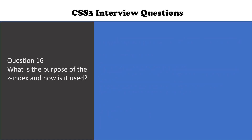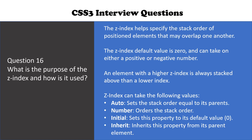The next question is: what is the purpose of z-index and how is it used? The z-index helps specify the stack order of positioned elements that may overlap one another. The z-index default value is zero and can take on either a positive or a negative number. An element with a higher z-index is always stacked above one with a lower index. Z-index can take the following values: auto, number, initial, and inherit.